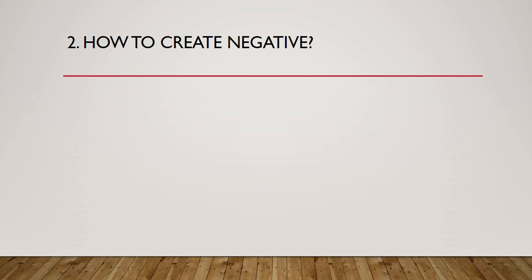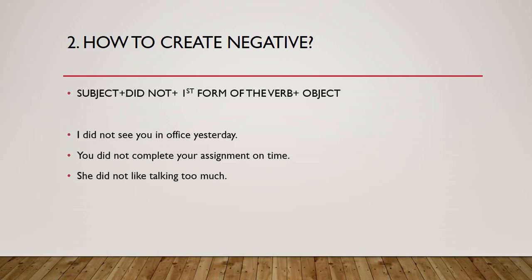Negative — negative kaise banate hain? Past simple ka yeh ek aisa area hai jisko samajhne ke liye aapko bahut dhyan dena hoga lecture pe — bilkul attentively aap sunein isko. Formula dekhen: negative banane ka — pehle subject lagaenge, phir 'did not' lagaenge, phir first form of the verb lagaenge, phir object lagaenge. Positive sentence mein subject plus second form of the verb plus object tha, lekin negative mein did not ke baad second form nahi lagaenge — first form of the verb lagaenge aur phir object. Yahan pe aap logon se zyada galtiyan hoti hain ki aap did not bhi lagate hain aur second form bhi lagate hain — is tarah se nahi kijiyega. Subject plus did not plus first form of the verb — please remember that.